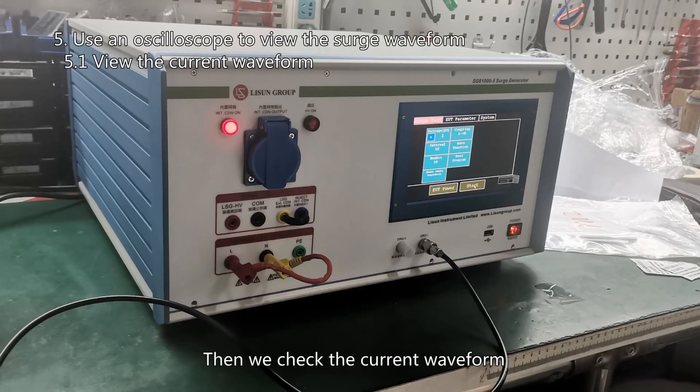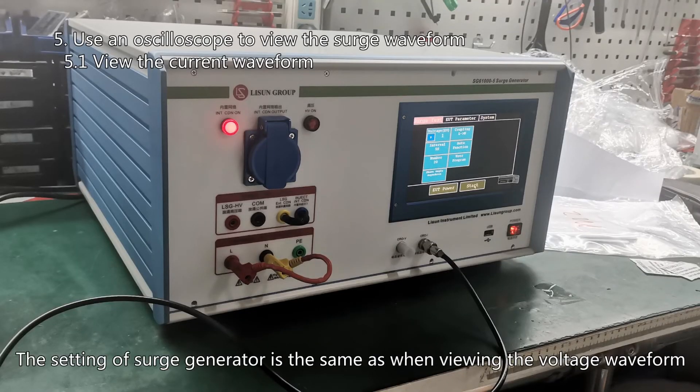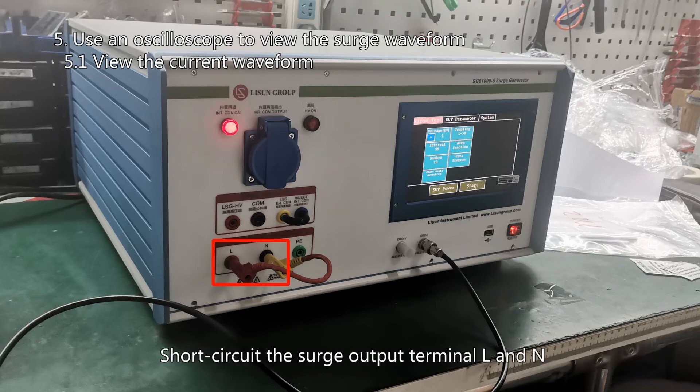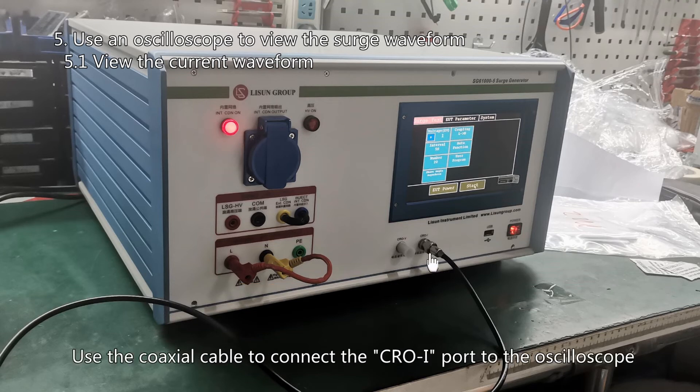Then we check the current waveform. The setting of surge generator is the same as when viewing the voltage waveform. Short-circuit the surge output terminal L and N. Use the coaxial cable to connect the CROI port to the oscilloscope.